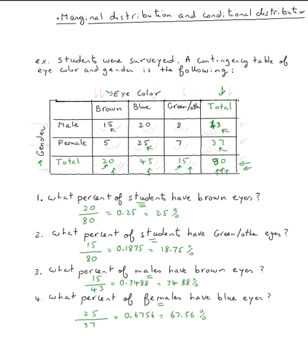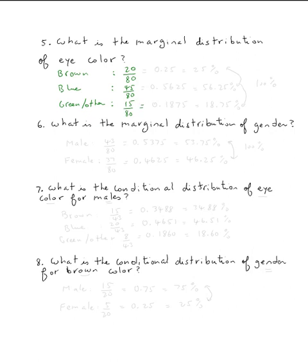We're only using that totals row. Using the calculator: 20 divided by 80 is 0.25, which is 25%. Then 45 divided by 80 is 0.5625, which is 56.25%. And then 15 divided by 80 is 0.1875, which is 18.75%.